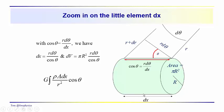Zooming in on the differential volume element: the area is pi R squared, the cylinder has radius R, the differential element has length dx. At the surface, the left and right sides of this differential volume element subtend an angle d-theta. We assume we're far enough away from the point of observation that we can approximate the arc length as a straight line with length r d-theta.